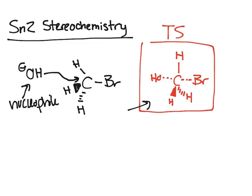Those bonds are being partially formed and partially broken. Because remember, carbon can't have five bonds. And so, this is the transition state.